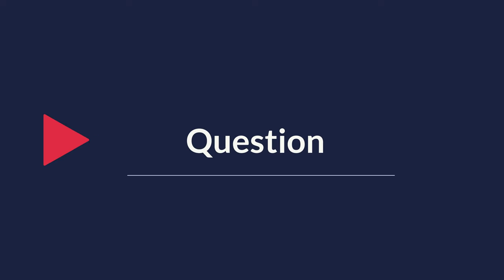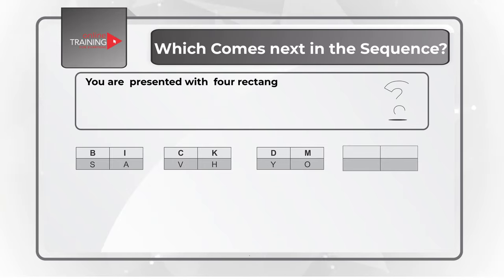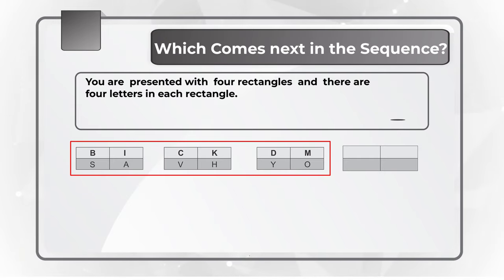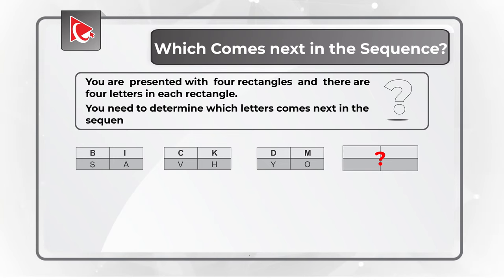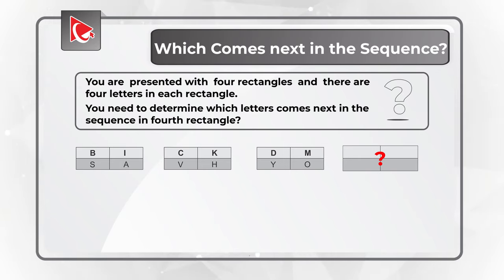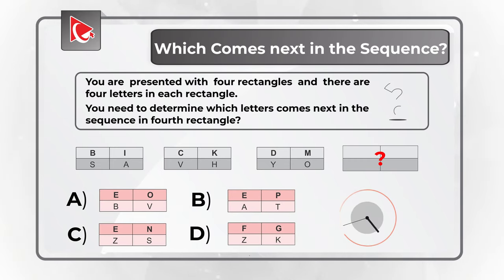Here is one of my favorite questions where you need to determine the next item in the sequence. You are presented with 4 rectangles, each containing 4 letters. Three rectangles contain letters and you need to determine the letters in the fourth rectangle. The upper row of letters is bold and the lower row is regular font. You need to determine the item that comes next in the sequence from four choices: A, B, C, and D. Take a close look to see if you can determine the answer.